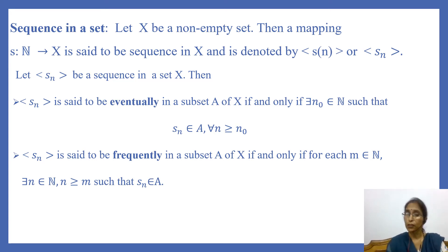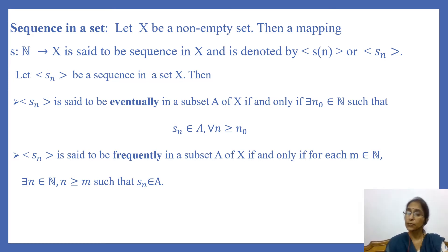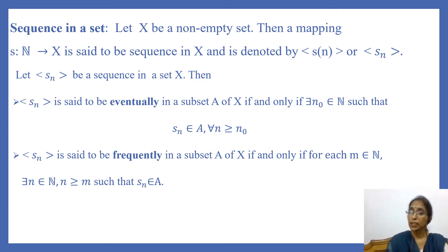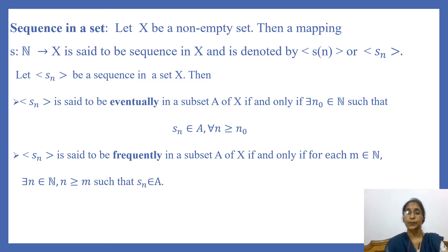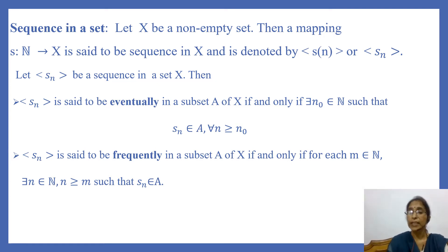The sequence S_n is said to be frequently in a subset A of X if and only if for each natural number m there exists a natural number n greater than or equal to m such that S_n belongs to A. That means for every natural number we can find some natural number such that the corresponding term belongs to A. We note that if a sequence is eventually in a set, then it is also frequently in that set.